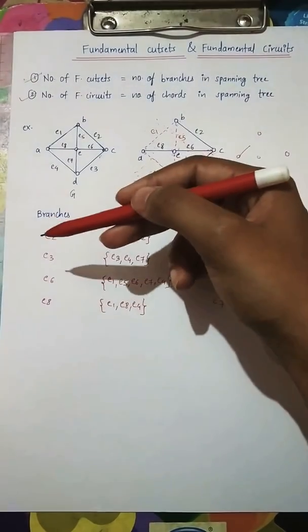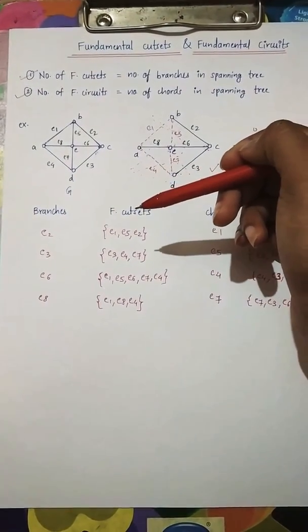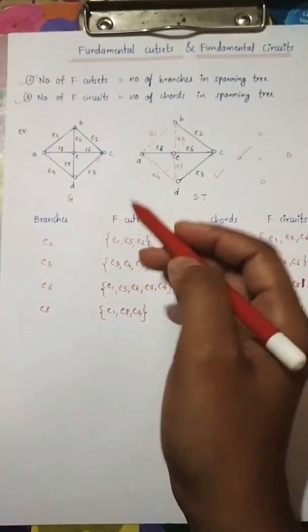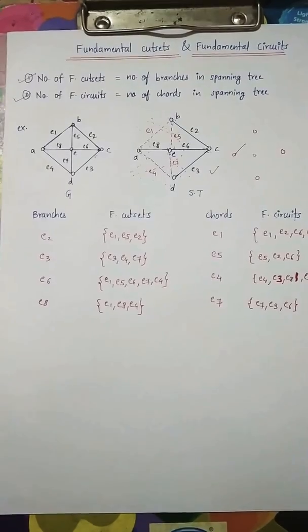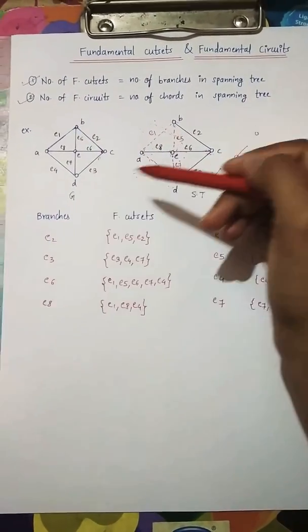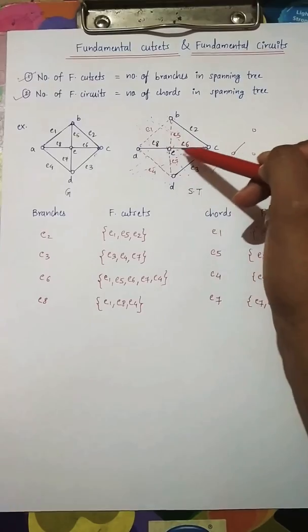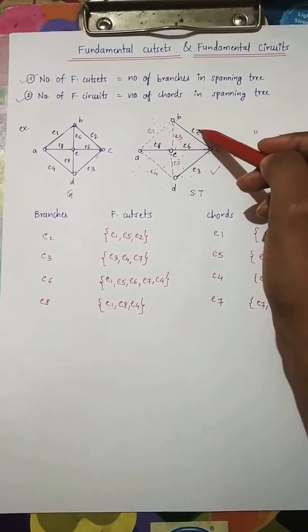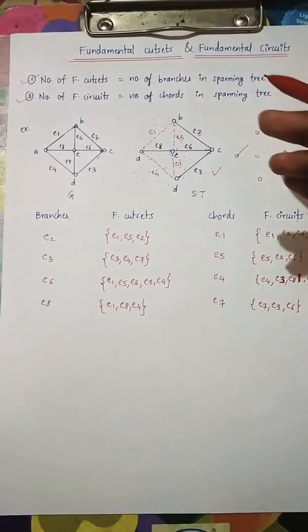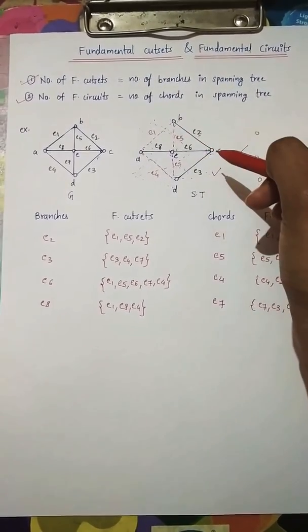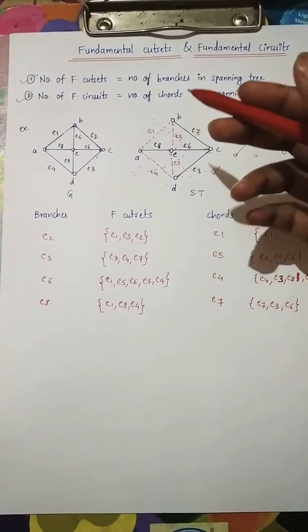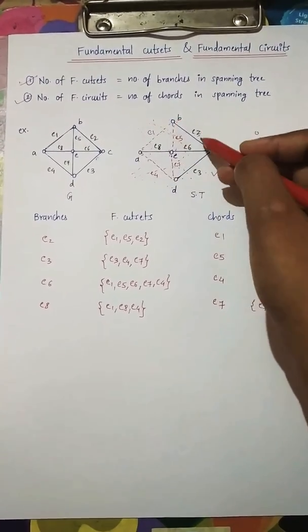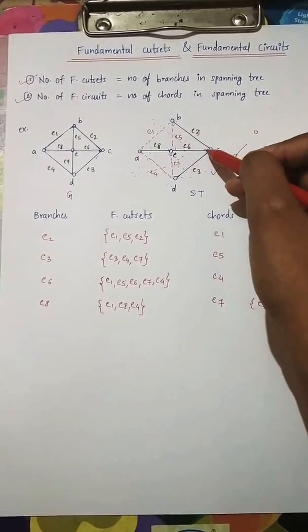From branches we derive fundamental cut sets, and from chords we derive fundamental circuits. The basic principle of a fundamental cut set is that there should be only one branch and there can be more than one chord in the cut set. The branches are e2, e3, e8, and e6.